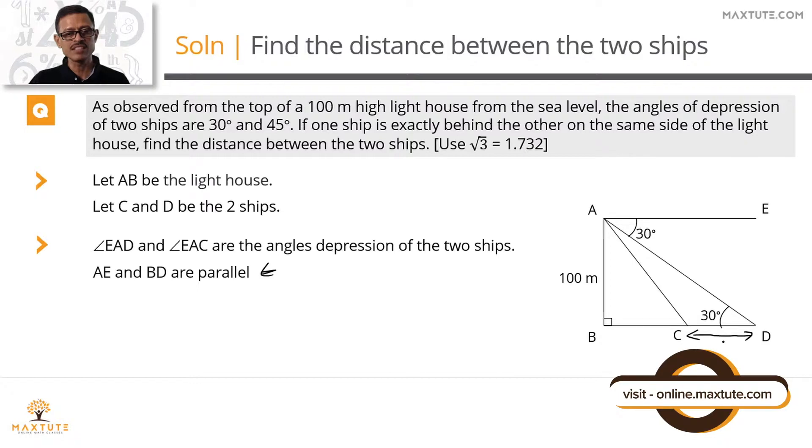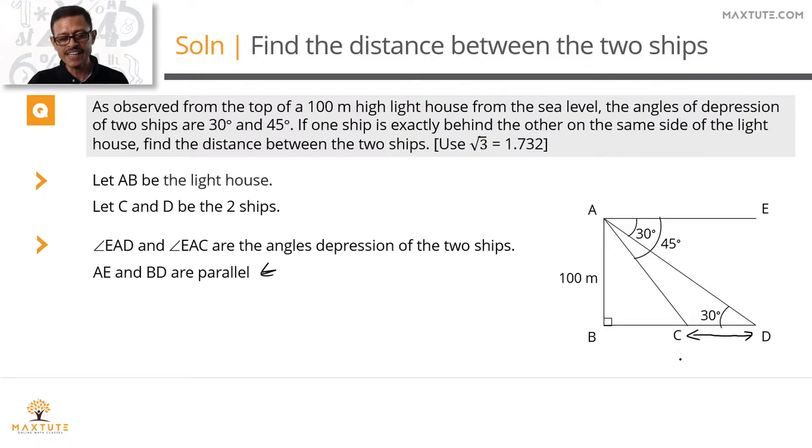In trigonometric parlance, angle of depression equals angle of elevation. Let's move on to the second ship which is C. The angle of depression of this ship is 45 degrees, so angle EAC equals 45 degrees. Applying the same logic, AE and BD are parallel lines, so angle ACB will also equal 45 degrees.